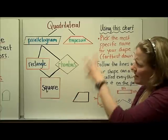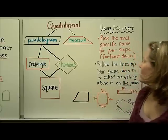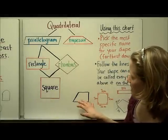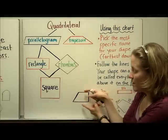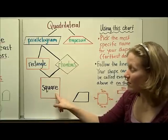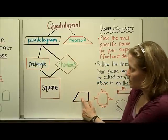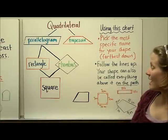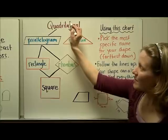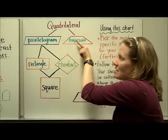How does this diagram help you? Take a shape and find all the names you can give it. Pick the most specific name — the farthest down on the chart. For example, this shape is a trapezoid because it has one pair of parallel sides. I can't call it a rectangle, square, or parallelogram. Then follow the lines up — your shape can also be called everything above it on the path. So a trapezoid can also be called a quadrilateral.